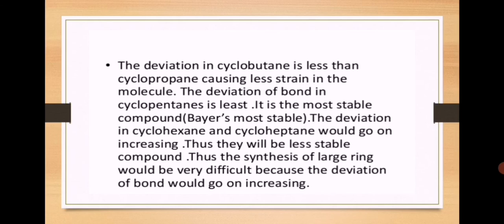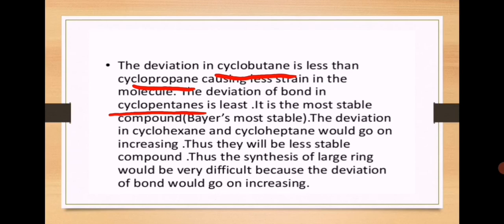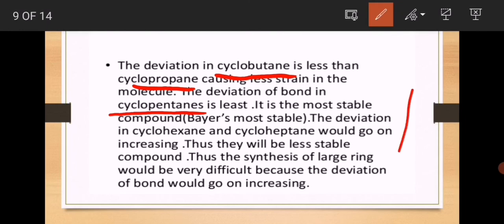According to Baeyer's theory, the deviation of bond angle in cyclopentane is the least, so it should be the most stable compound. However, this is not actually correct. Ring strain is highest in cyclopropane, a little less in cyclobutane, while cyclohexane has zero ring strain and is actually the most stable. Baeyer's theory incorrectly identifies cyclopentane as most stable — this is a limitation of Baeyer's theory, meaning it does not completely explain the phenomenon.